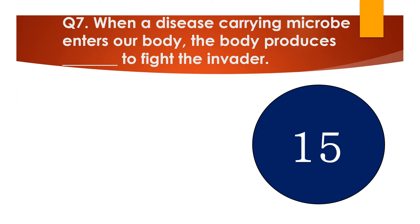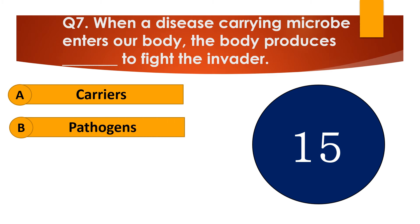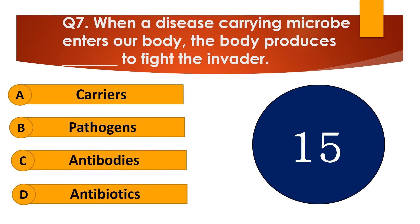Question number 7. When a disease-carrying microbe enters our body, the body produces dash to fight the invader. The options are: A. Carriers, B. Pathogens, C. Antibodies, or D. Antibiotics.